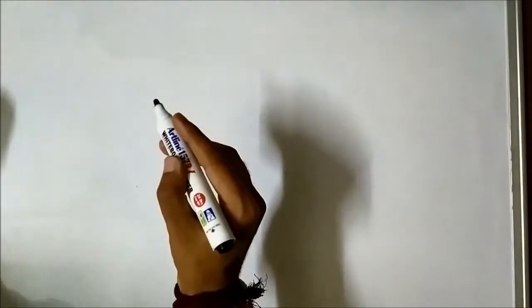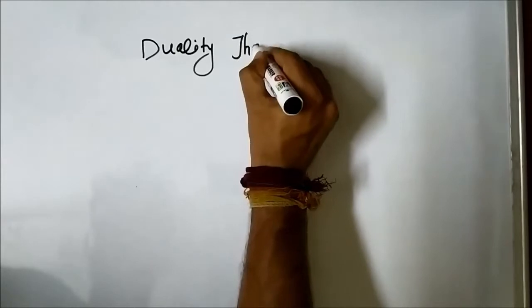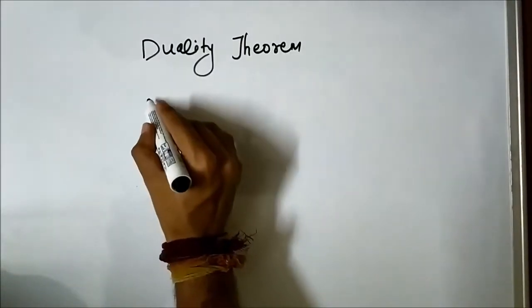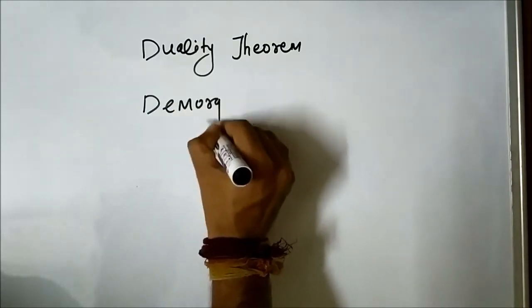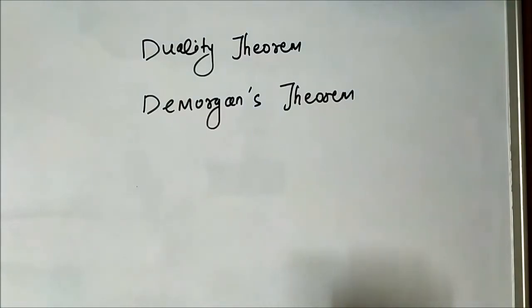Hello friends, welcome to Engineering Tutorial. In today's video we are going to discuss two important theorems associated with digital electronics, particularly the Boolean algebra part, which is used in solving lengthy and complicated logic expressions. Those two theorems are the duality theorem and De Morgan's theorem. These two theorems are very important when it comes to logic circuits or the handling of logic expressions.